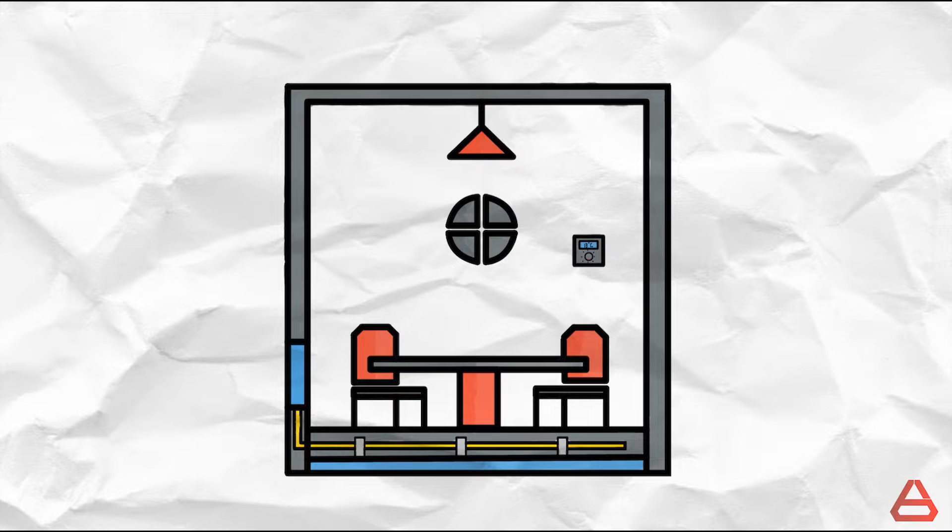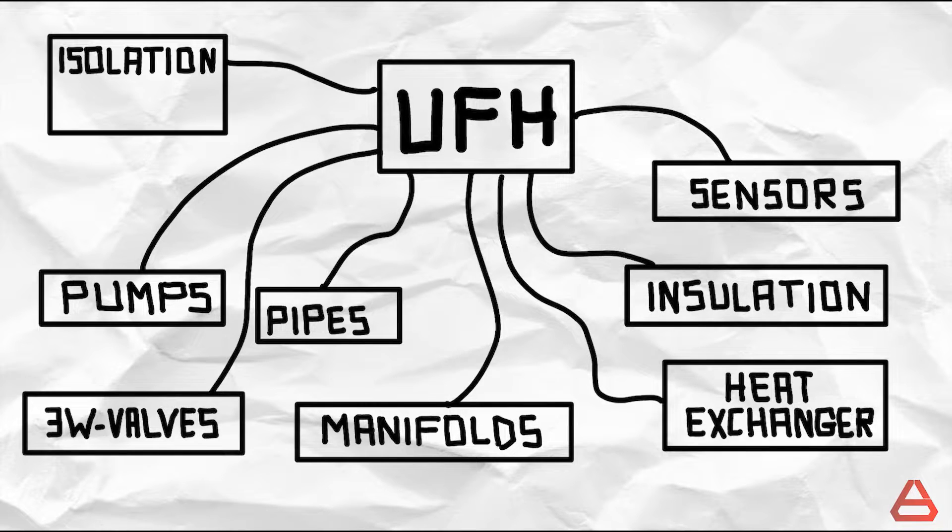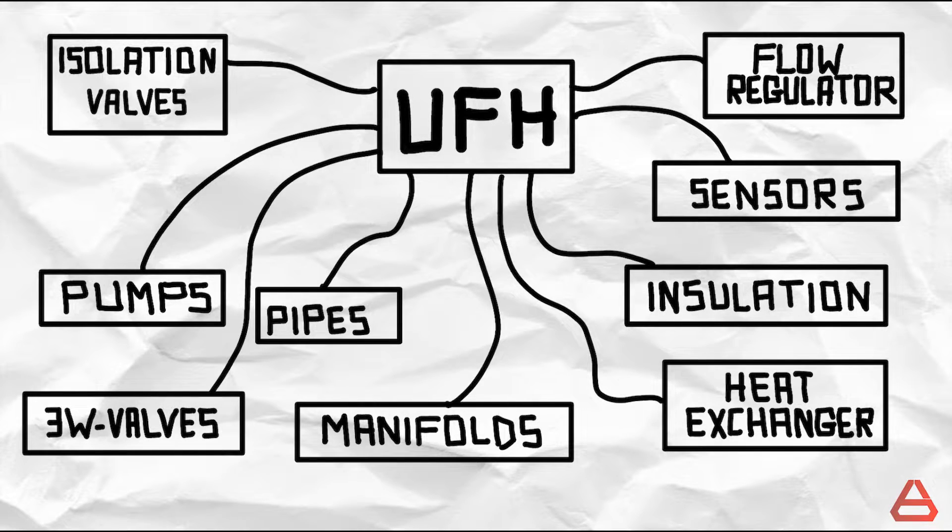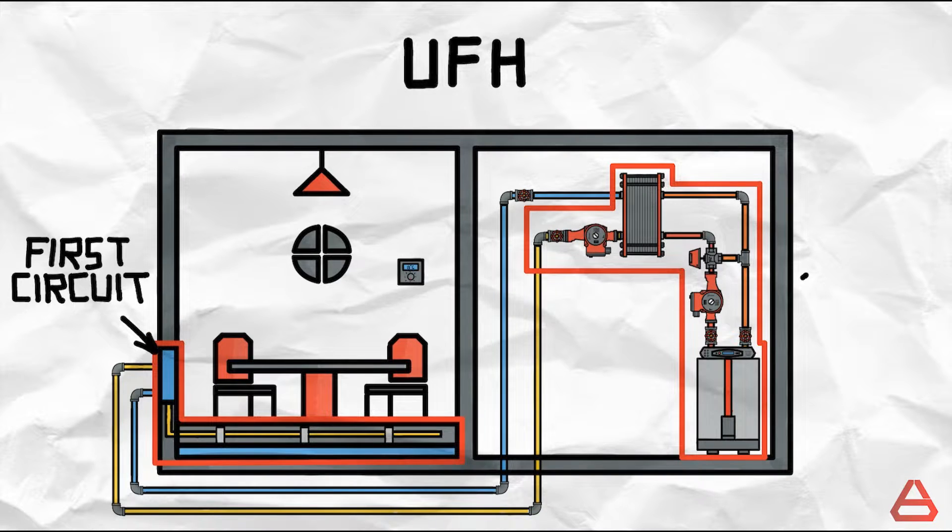Now let's dive deeper into how we arrive at a heated floor. We consider a simple case of a room to be heated using a floor heating system. Now an actual underfloor heating system would have many components which if I were to explain all together would seem difficult. So allow me to divide any floor heating system into two parts or circuits circulating water.